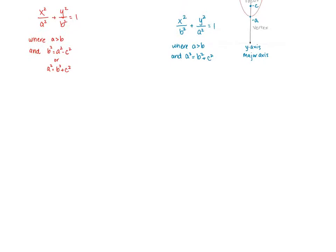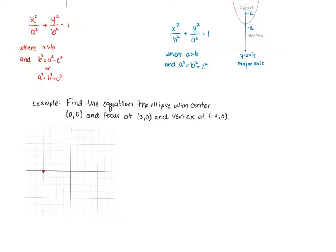Let's look at an example. Find the equation of the ellipse with center (0,0), focus at (3,0), and vertex at (-4,0). First, I recommend graphing this information.